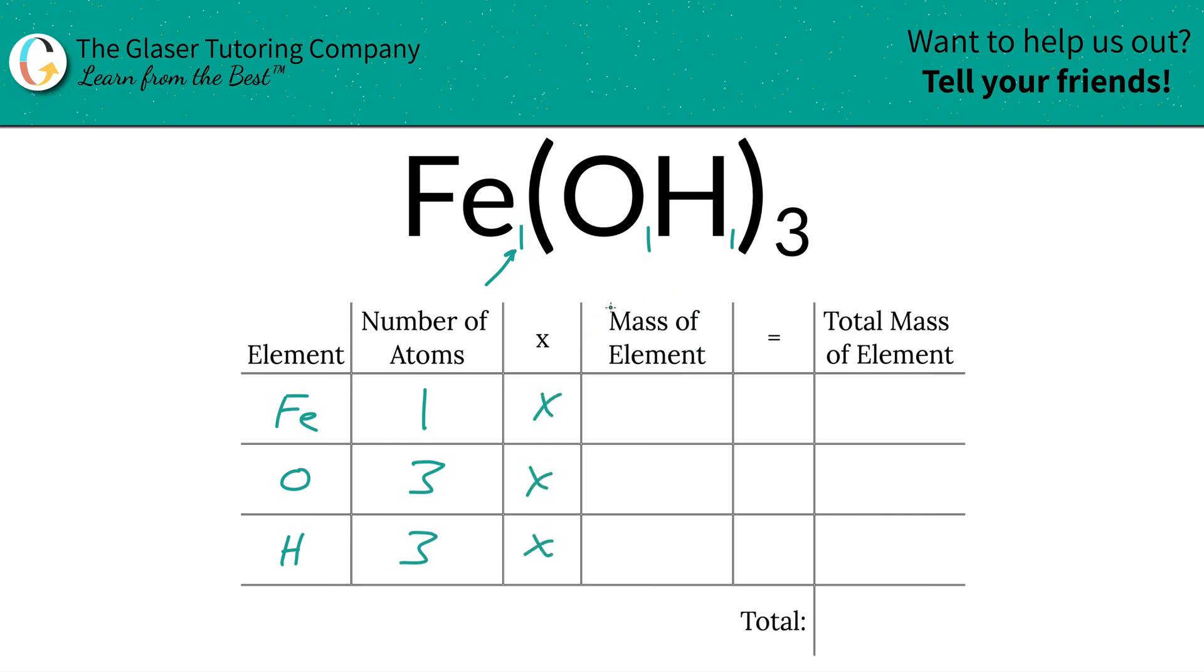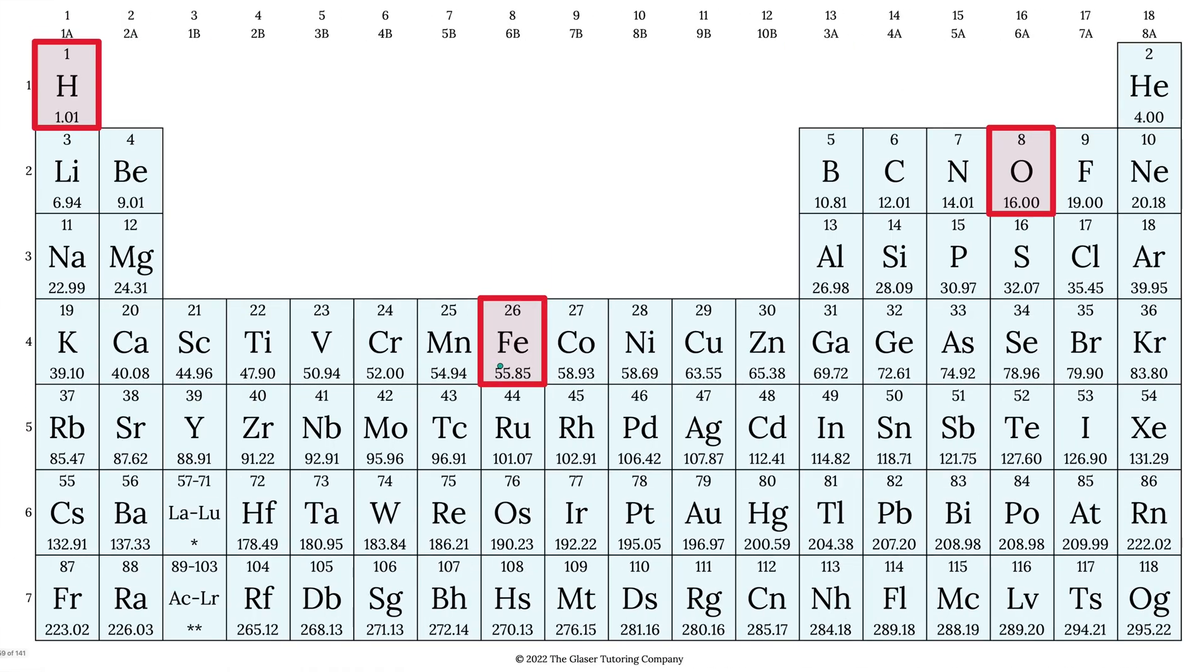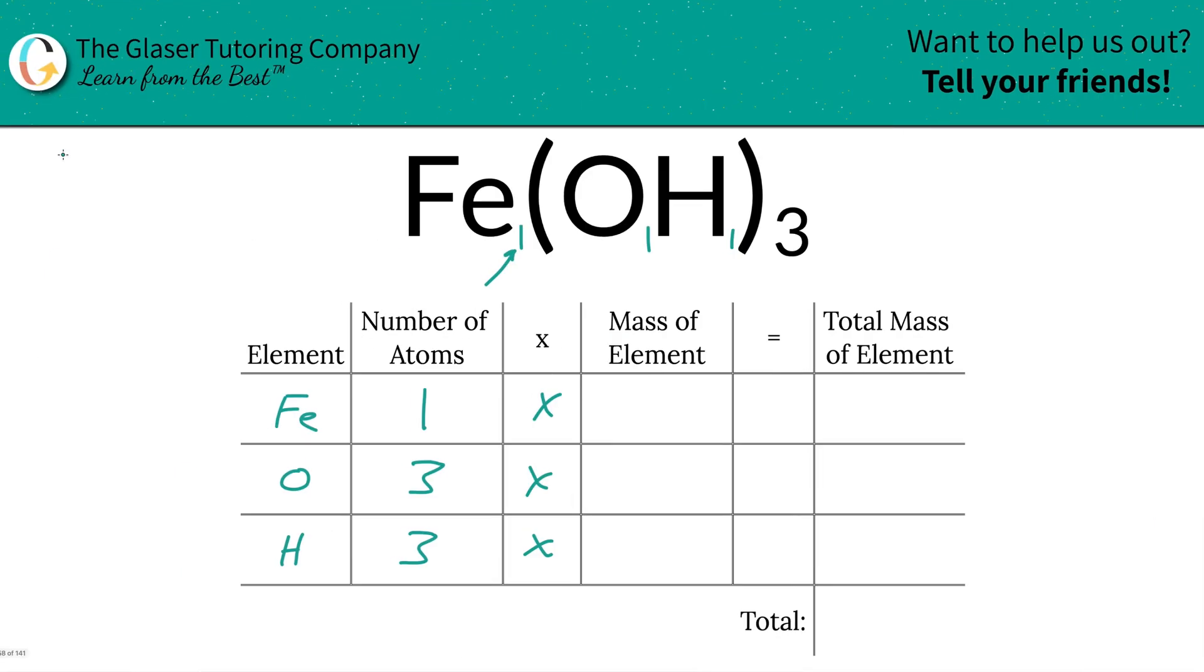Then we're going to find the masses of the elements. Where do we find these? Oh, periodic table. So iron's mass is going to be 55.85, oxygen is 16, and hydrogen is 1.01. And those are the masses we're going to write down. So 55.85.